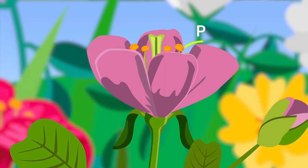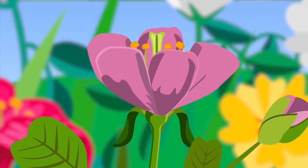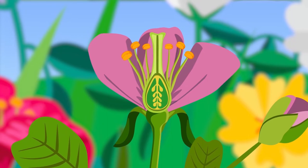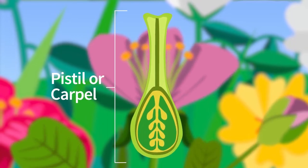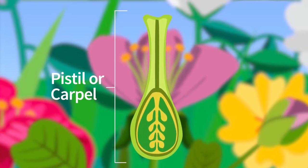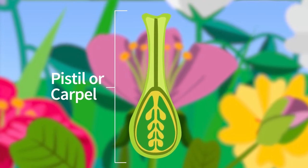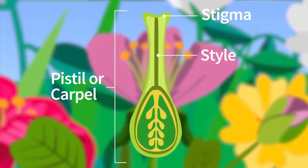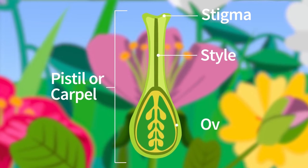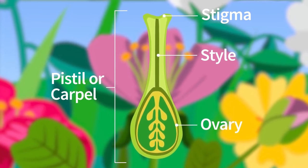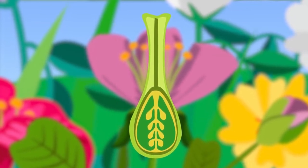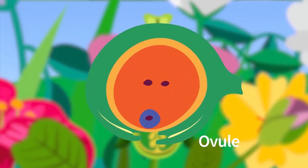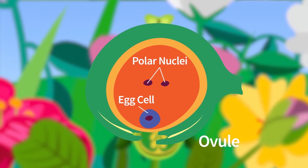The colorful parts of the flower are the petals. They give the flower its shape and attract insects to the plant. Now let us pull some petals off. The central part is the female reproductive organ known as the pistil or carpel. The pistil is made up of three major parts: the stigma with a sticky surface at the top, the style which is the long tube, and the ovary which is the bulged part at the bottom.